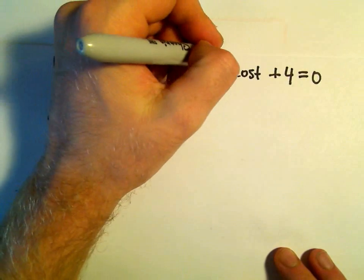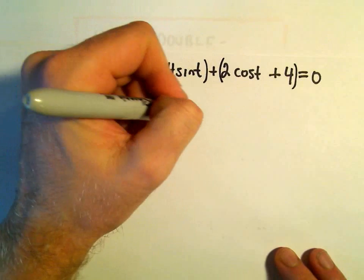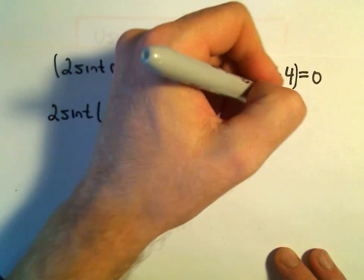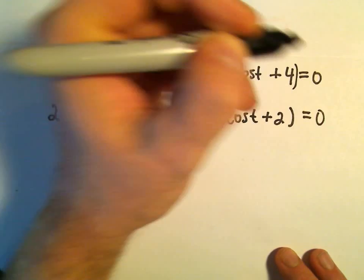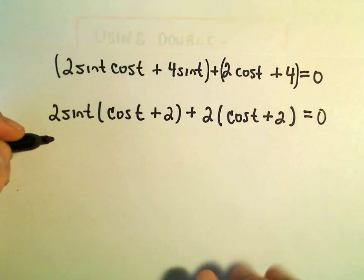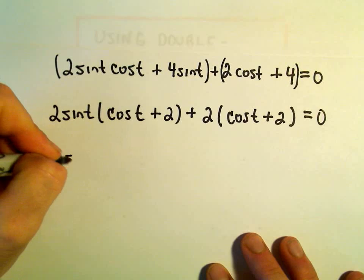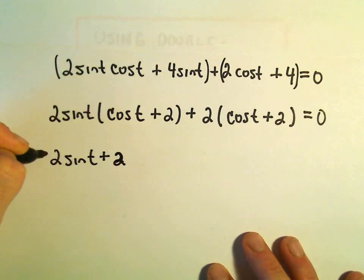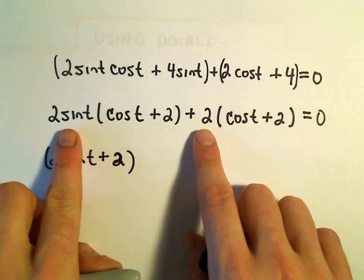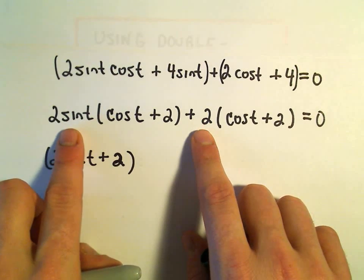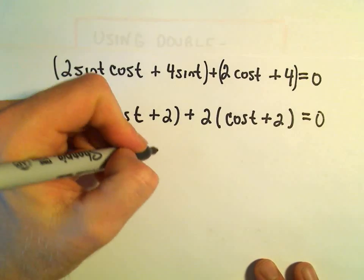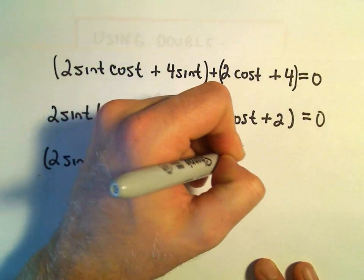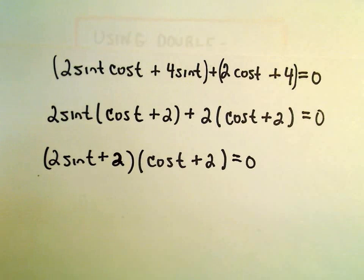Notice from our second two terms, we can do the same thing. We can factor out a 2. And that will leave us with cosine of t plus 2, well, equals 0. And now when we do our factoring by grouping, we'll have 2 sine of t plus 2 in one set of parentheses. So again, recall, we take basically the stuff out front of the parentheses. We've got our cosine of t plus 2 equals 0 in our other set of parentheses.